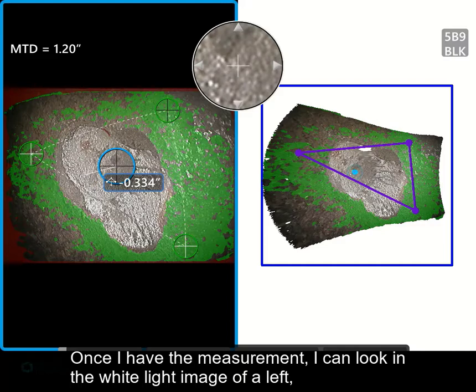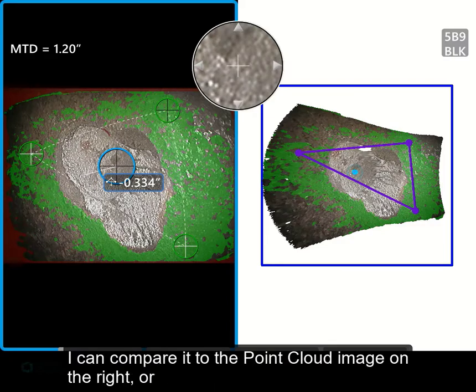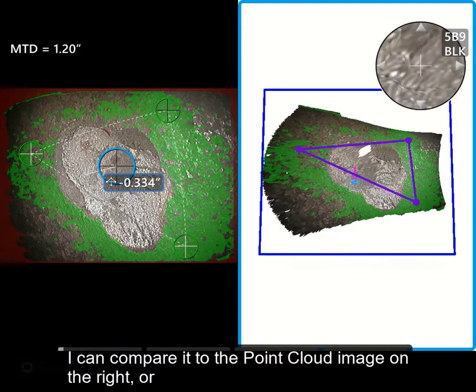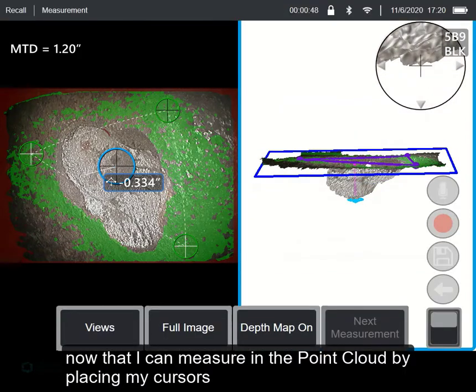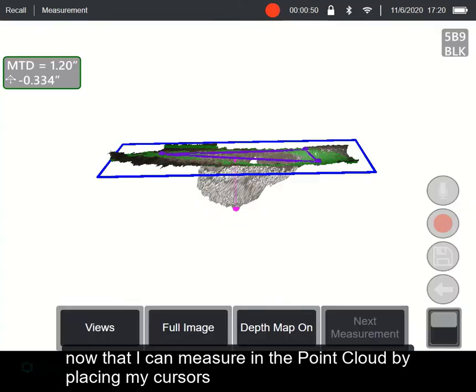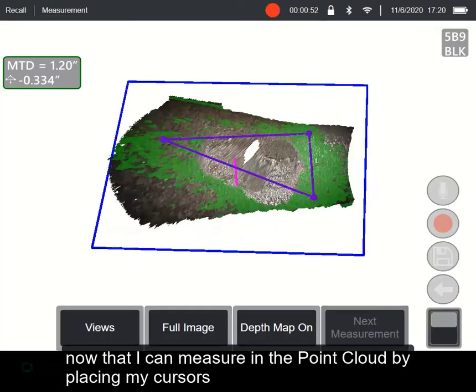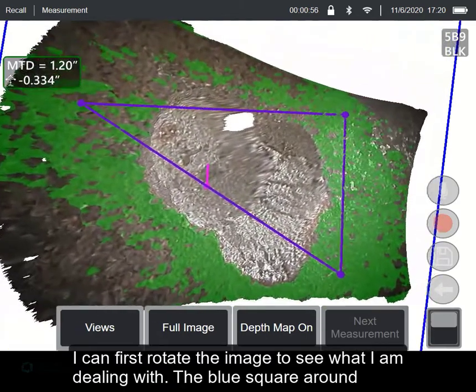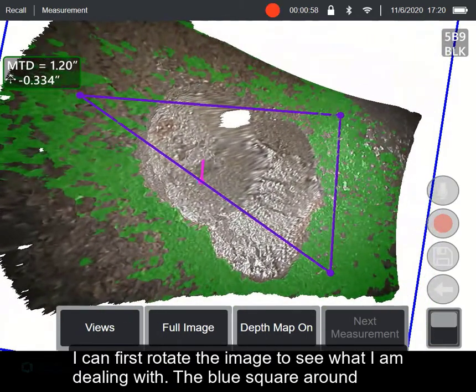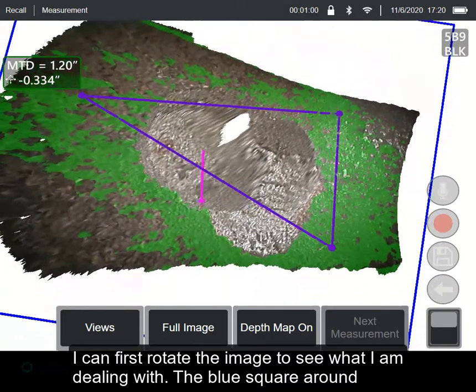Once I have the measurement, I can look in the white light image on the left, I can compare it to the point cloud image on the right. Now that I can measure in the point cloud by placing my cursors in a real 3D point cloud, I can first rotate the image to see what I'm dealing with.